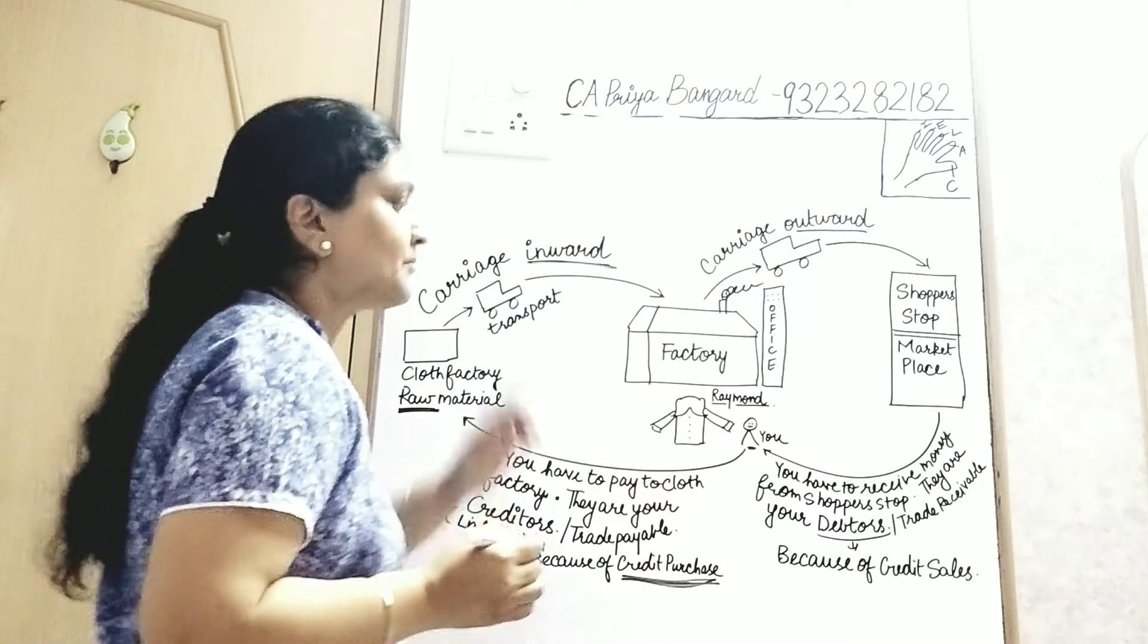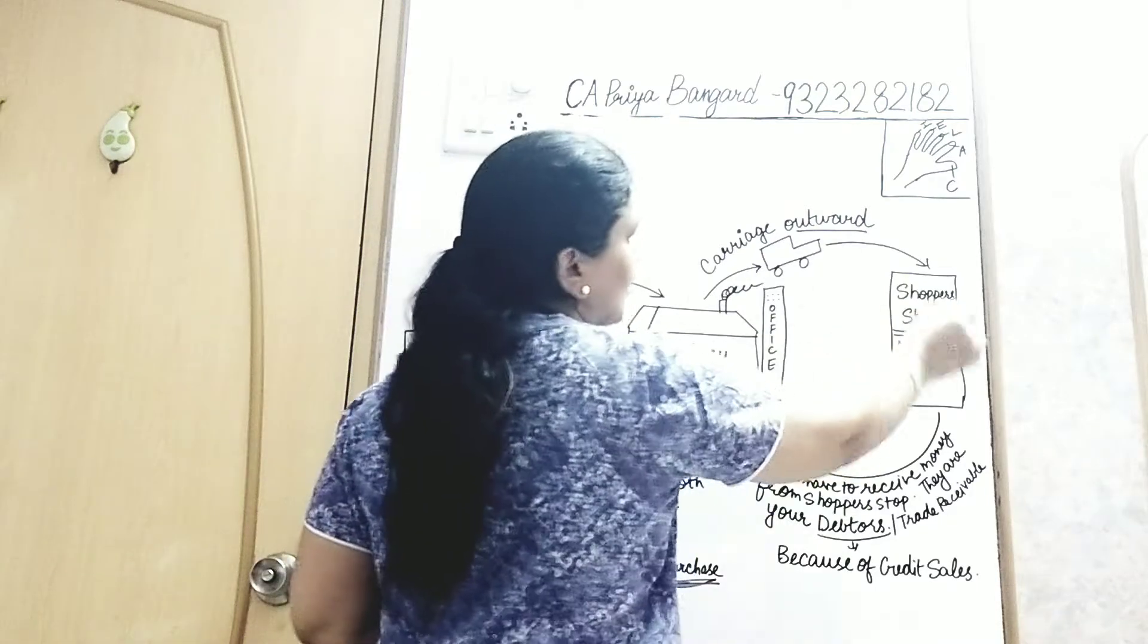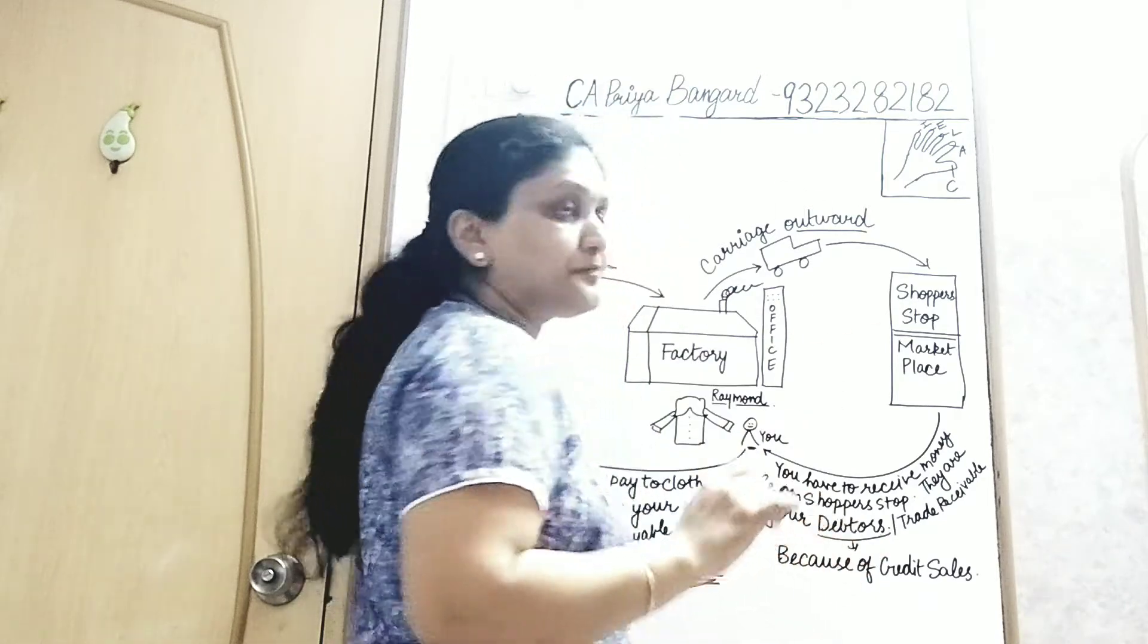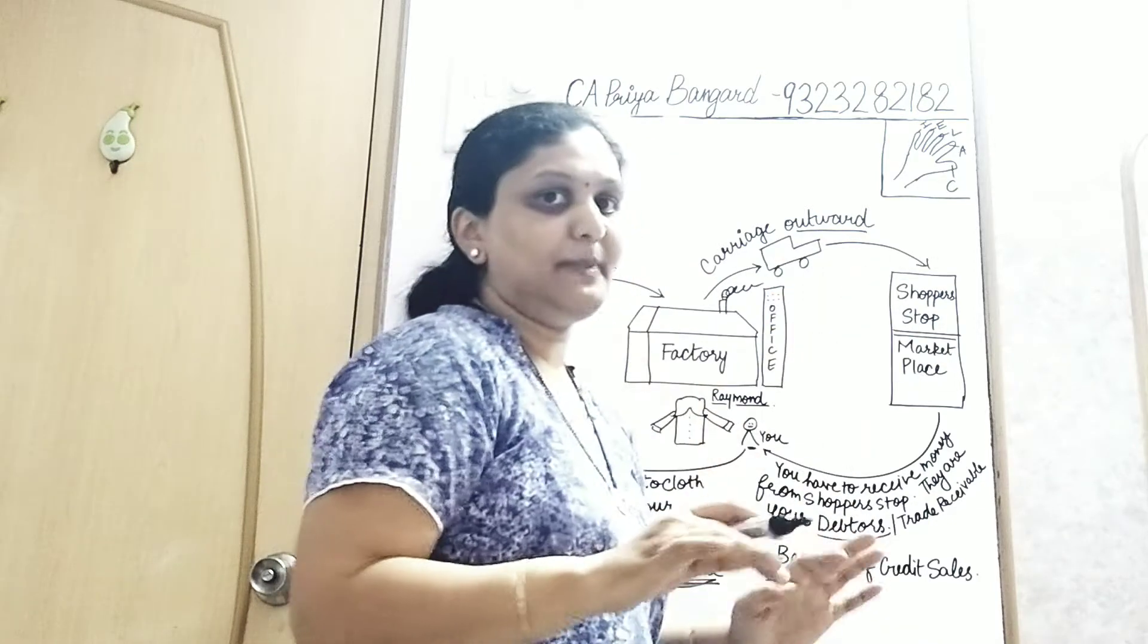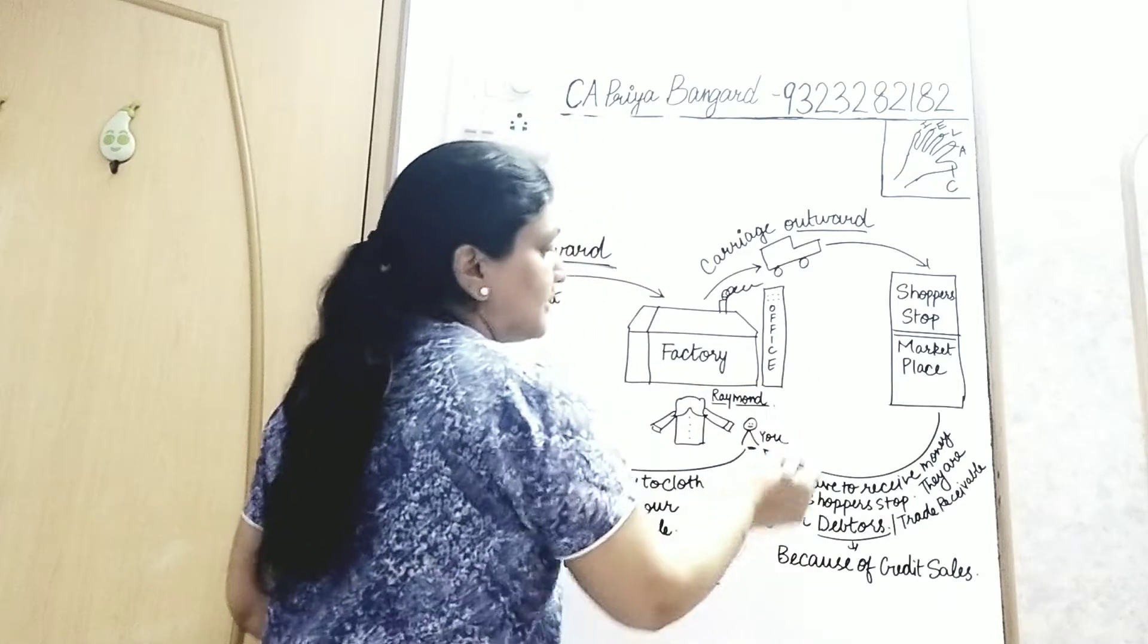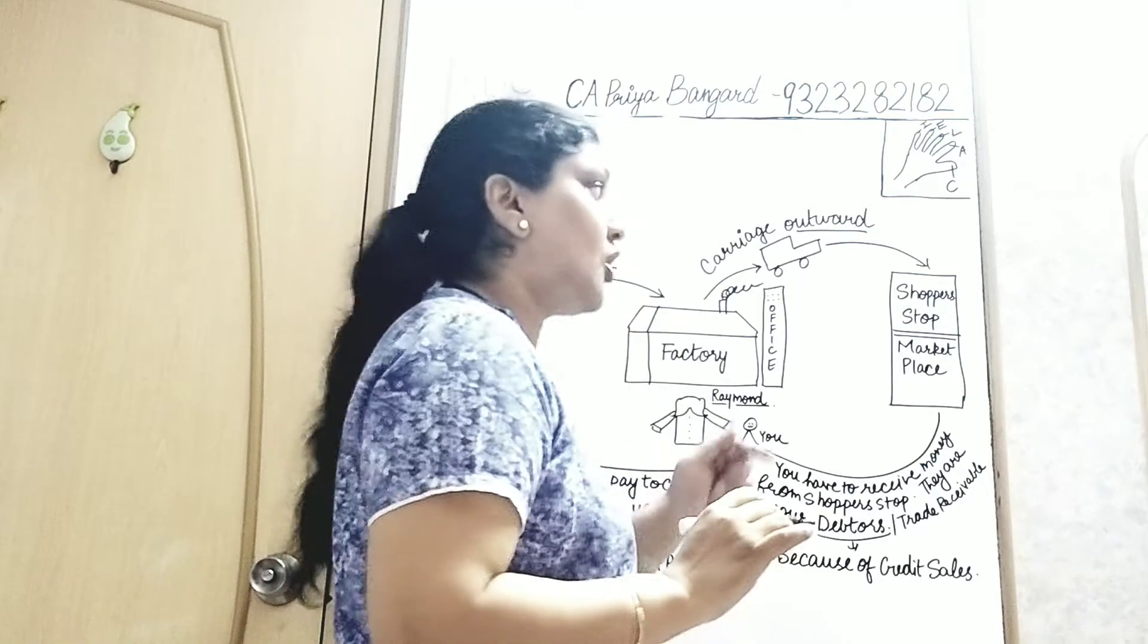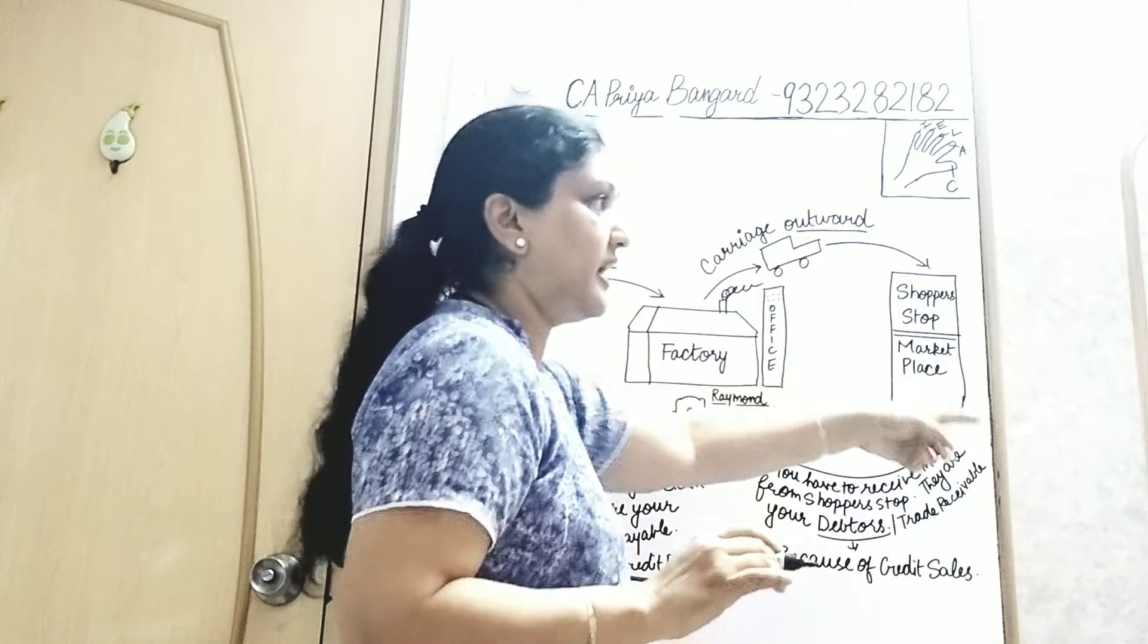Now understand what is debtors. Shopper's Stop took ready-made shirts from you. For example, you processed everything and then gave 2 lakh worth of shirts to Shopper's Stop for sale. Shopper's Stop told you that they will not pay you immediately - after one month they will pay you. So now, you as a businessman, as the proprietor of your business, you have to take money from Shopper's Stop. So now Shopper's Stop is your debtor.